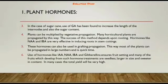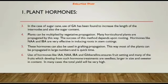Plants can be multiplied by vegetative propagation, and many horticultural plants are propagated this way. The success of this method depends upon rooting hormones; NAA and IBA are very effective in inducing roots in stem cuttings. These hormones can also be used in grafting propagation, allowing most plants to be propagated in large numbers in a short time.